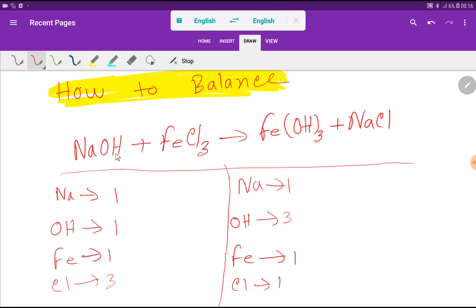To balance this reaction, we have to balance the number of sodium, hydroxide, iron and chlorine. So look at here. In the left hand side we have 1 sodium and 1 sodium. So already sodium is balanced. But look at here.